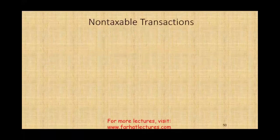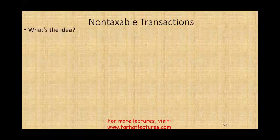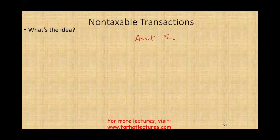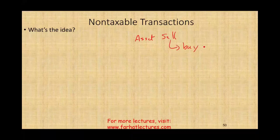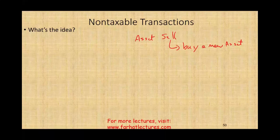Let's dive into the topic of non-taxable transactions. The idea is: you have an asset and you want to replace it. You want to sell this asset, then buy a new one — for example, sell an old truck, buy a new truck, or sell old machinery, buy new machinery. If you outright sell the asset, you will have the asset disposition formula. The IRS will say: compute the amount you realize minus the adjusted basis.